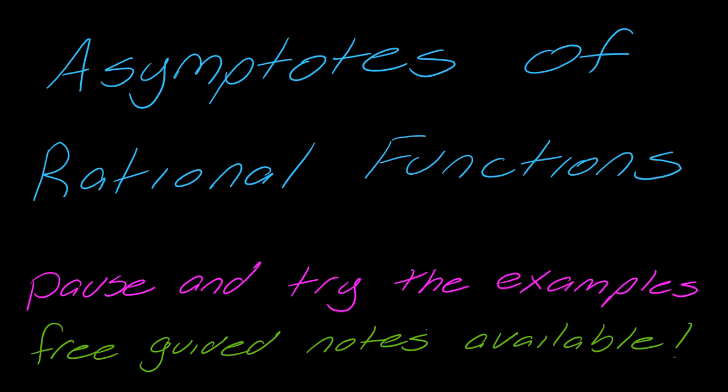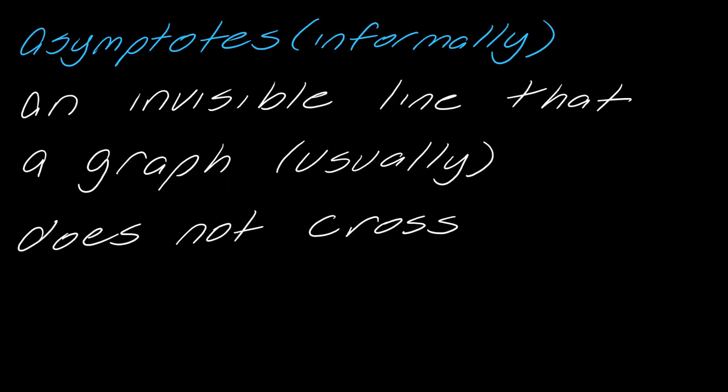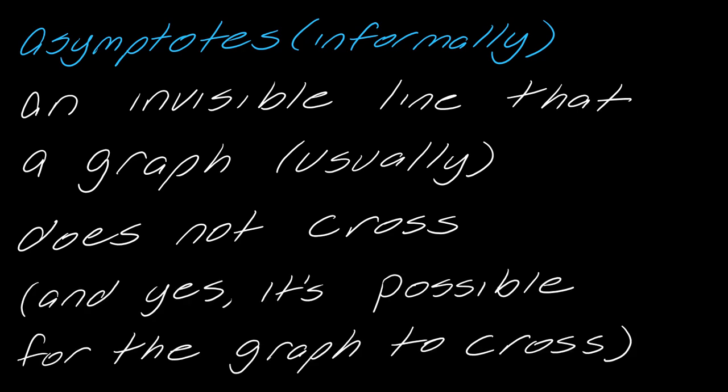In this video, we're going to talk about asymptotes of rational functions. An asymptote is an invisible line that a graph usually does not cross. It is actually possible for a graph to cross this line — a lot of people think it can't cross at all, but there are situations where it will happen, and we will see that in this video series.